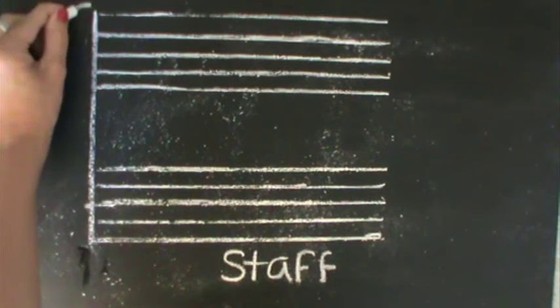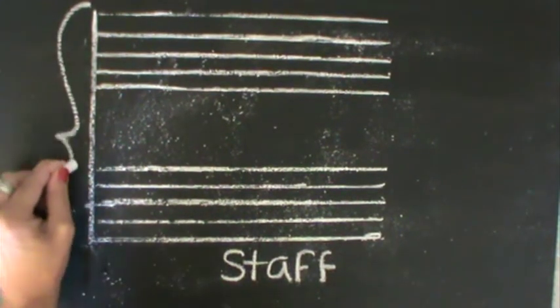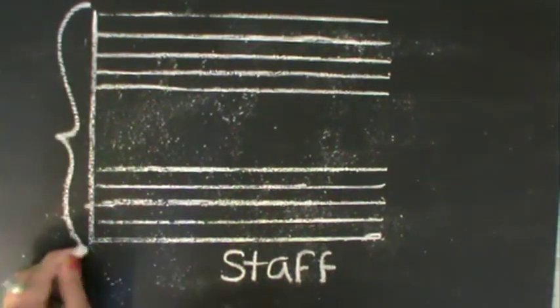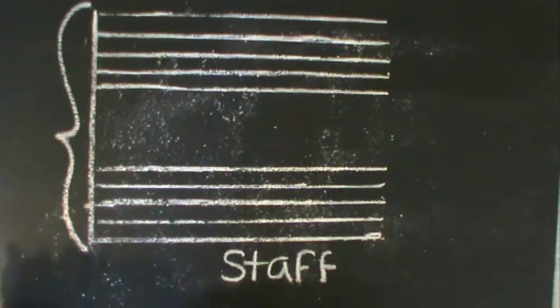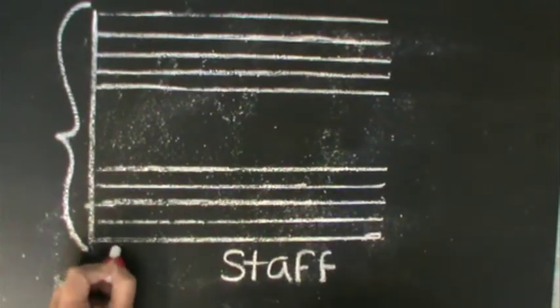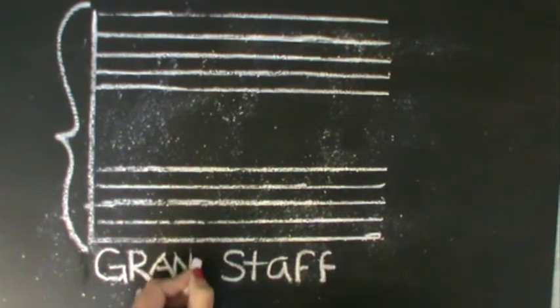Typically when you look at a piece of music you'll see two staffs, one on top and one on the bottom connected by a moustache, which is technically called a bracket. Why are there multiple staffs and why are they connected with a moustache? Think of how a pianist plays multiple notes on the piano with both their right and their left hand. In order to show what they're playing we use two staffs and connect them with a giant moustache and then call it a grand staff.